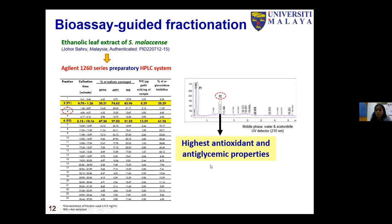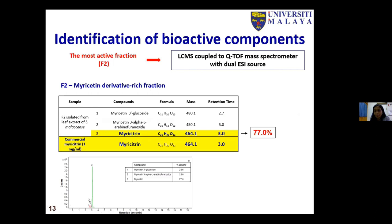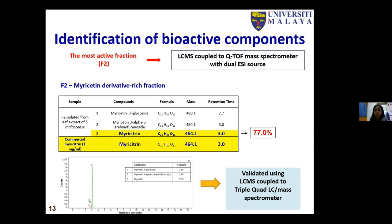The leaf extract was subjected to bioassay-guided fractionation using a preparatory HPLC system. Out of the fractions obtained, fraction 2 showed very potent antioxidant and anti-glycemic properties. We isolated this fraction and subjected it to LC-MS analysis to identify the bioactive components. Interestingly, the fraction was rich with myricetin derivatives — particularly myricetin, which was present at the highest percentage, about 77%. This data was further validated using LC-MS coupled to a triple quad LC-MS mass spectrometer.